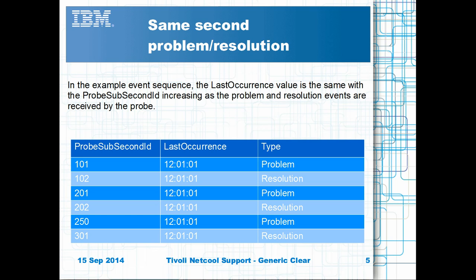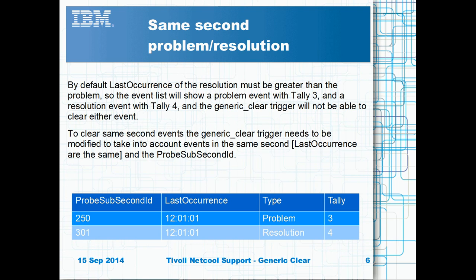For example, by default, if a series of problems and resolutions arrive at the probe within the same second, they will differ only by the probe sub-second ID and type. By default, the object server will display and hold both the problem and resolution, with the resolution having a tally of 4 and the problem having a tally of 3. For the same second resolution to clear the problem event, the generic clear trigger needs to take account of the probe sub-second ID.